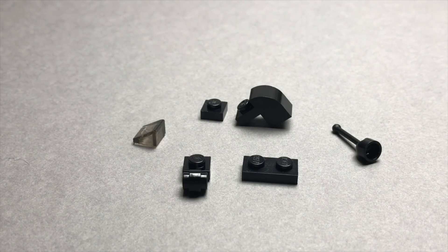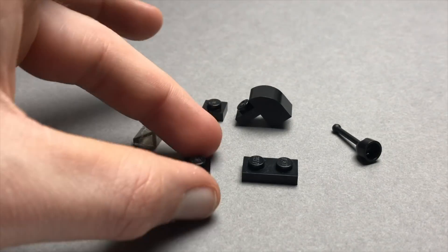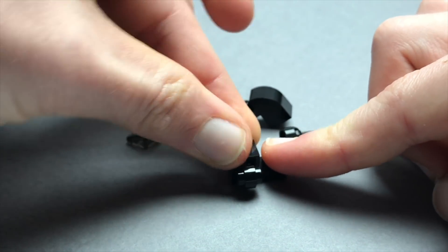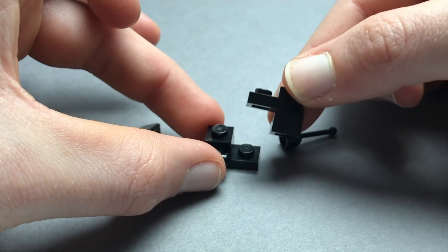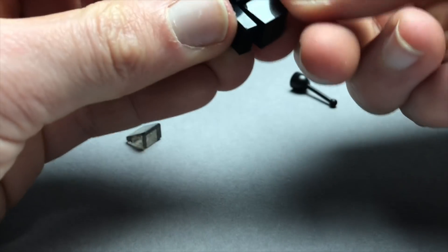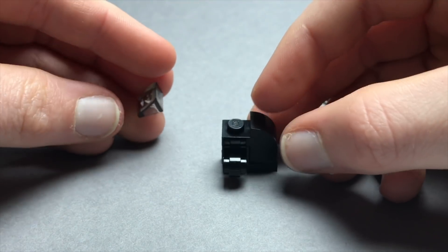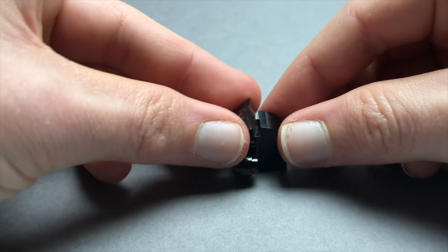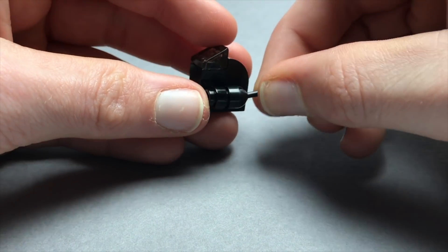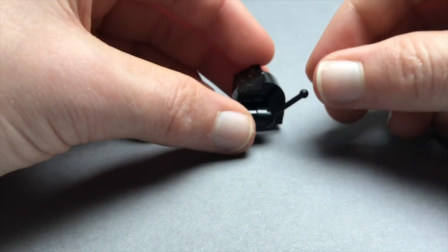You can make a cash register by taking a 1x2 plate and then one of these pieces, a 1x1 plate, and then one of these large curved ones which goes just on top. Then you can take a cheese wedge, I've used trans black, and then you can take another lever in black and there you go.